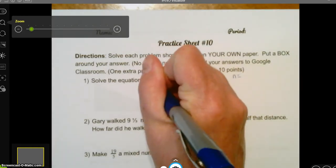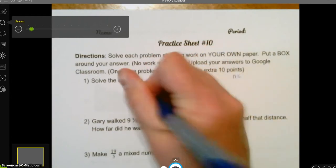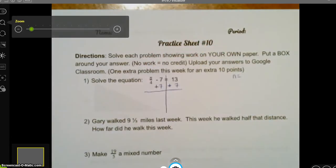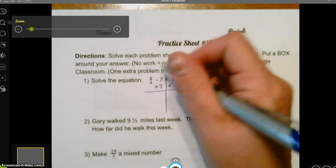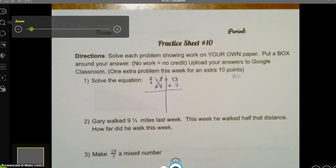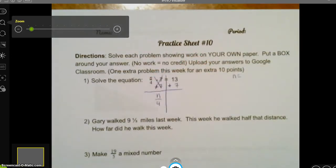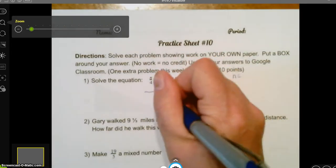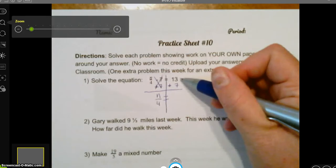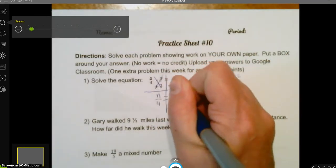So in order to get rid of minus 7, we do the opposite. And we do plus 7. So remember that means we have 0 pairs, 7, 0 pairs on the left. So I still have n over 4 on the left, because this went to 0. And over this side, on the right side, I have 13 plus 7, which is equal to 20.